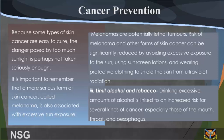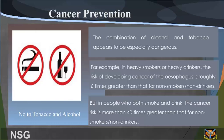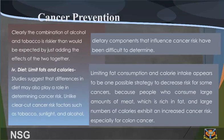3. Limit Alcohol and Tobacco. Drinking excessive amounts of alcohol is linked to an increased risk for several kinds of cancer, especially those of the mouth, throat, and oesophagus. The combination of alcohol and tobacco appears to be especially dangerous. For example, in heavy smokers or heavy drinkers, the risk of developing cancer of the oesophagus is roughly 6 times greater than that for non-smokers or non-drinkers. But in people who both smoke and drink, the cancer risk is more than 40 times greater. Clearly, the combination of alcohol and tobacco is riskier than would be expected by just adding the effects of the two together.